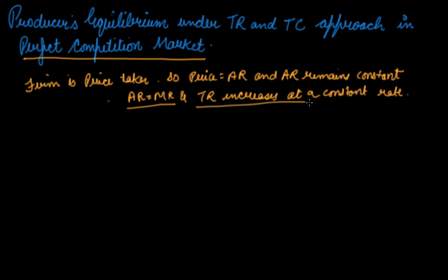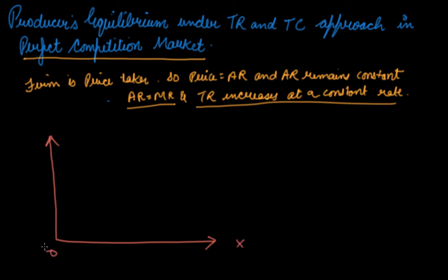If your TR increases at a constant rate — with output on the x-axis and TR on the y-axis — then the TR curve will be a straight line, because a constant rate of increase produces a linear relationship.